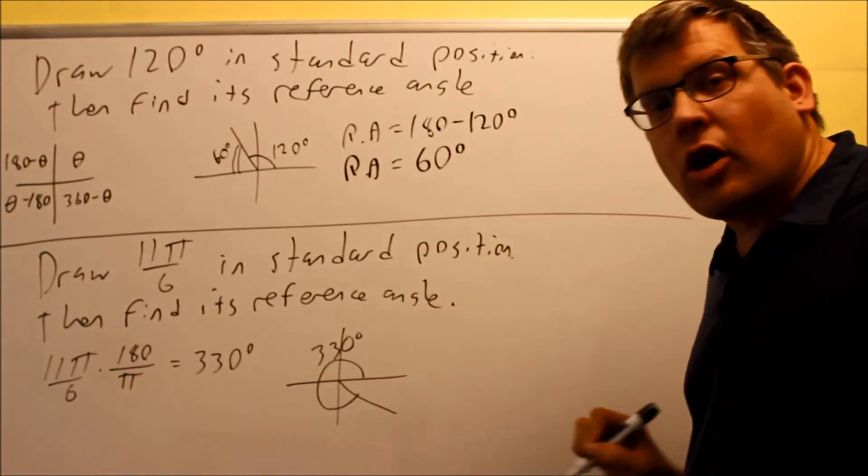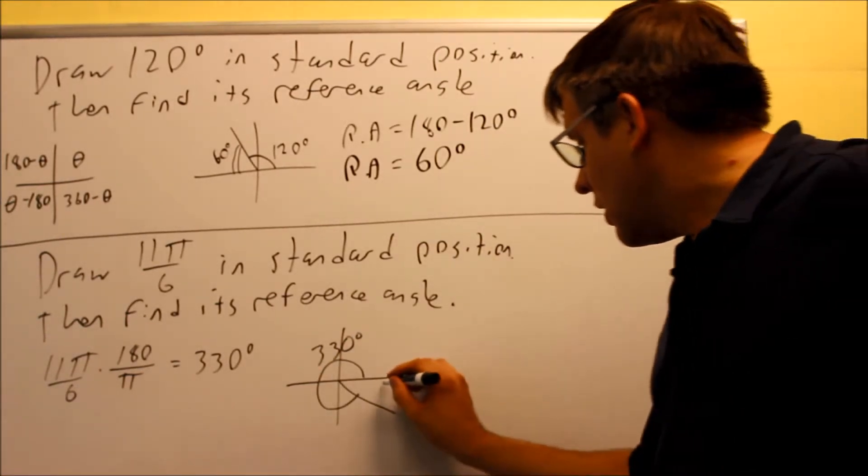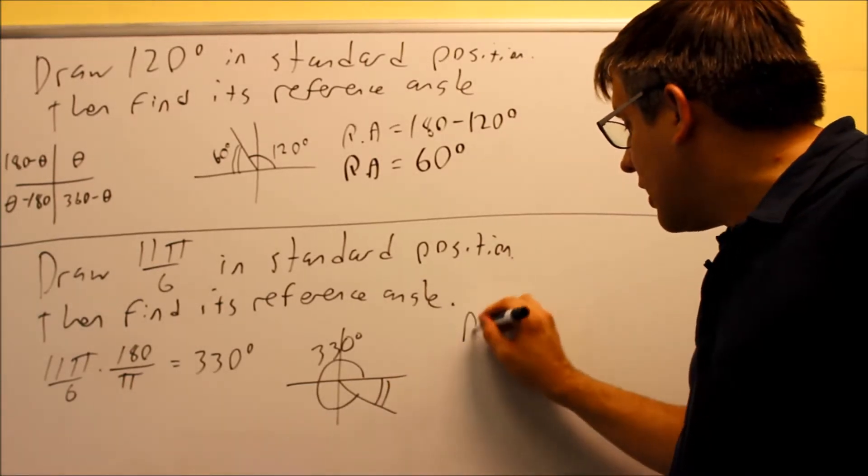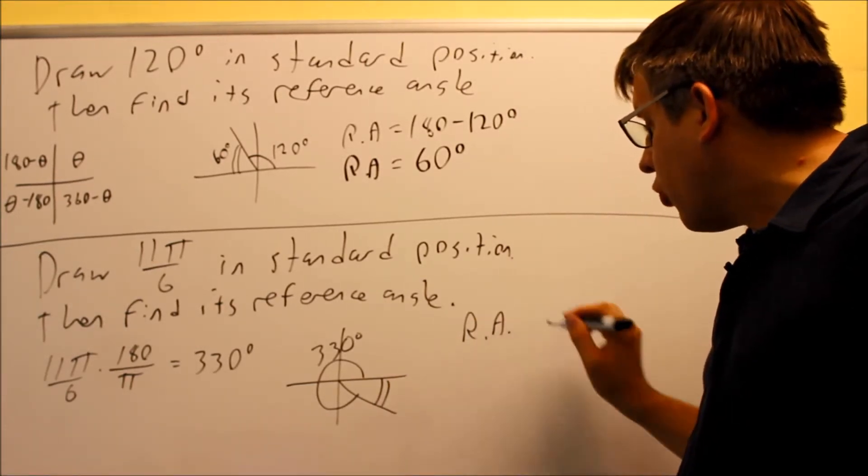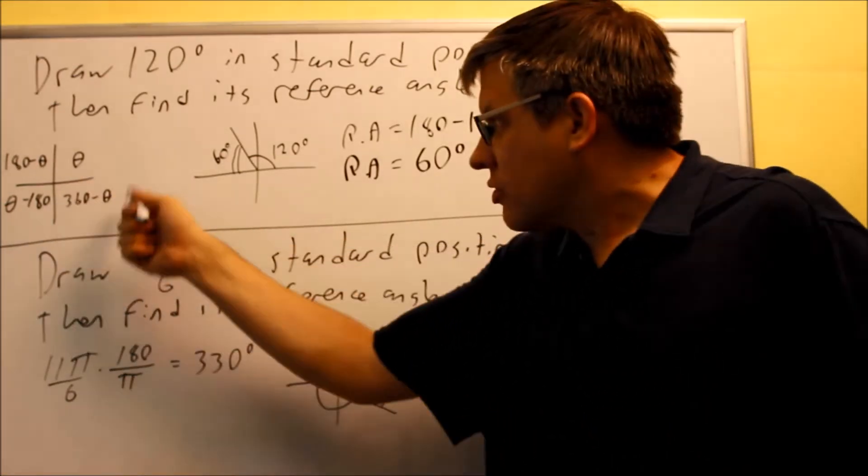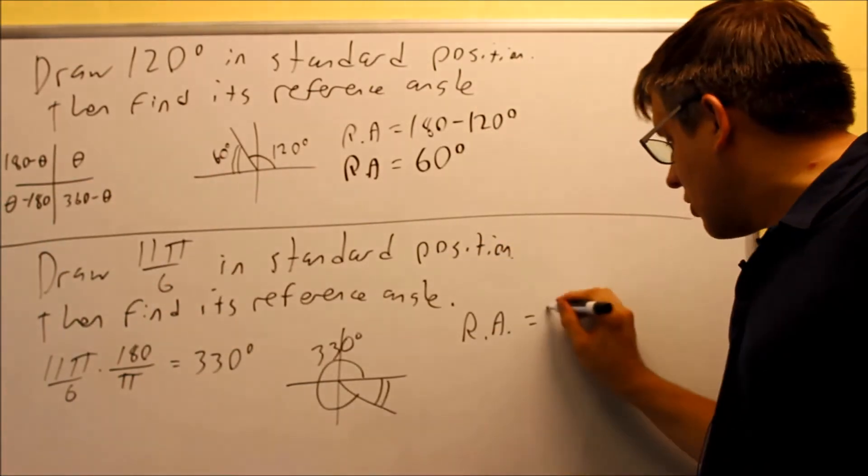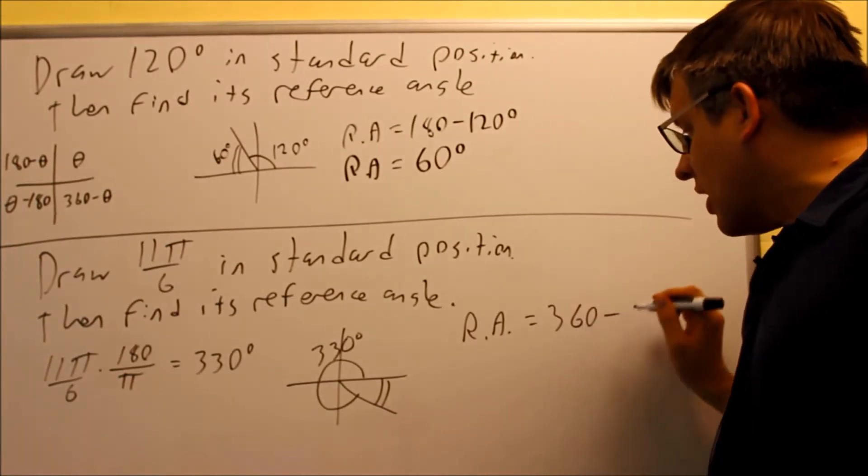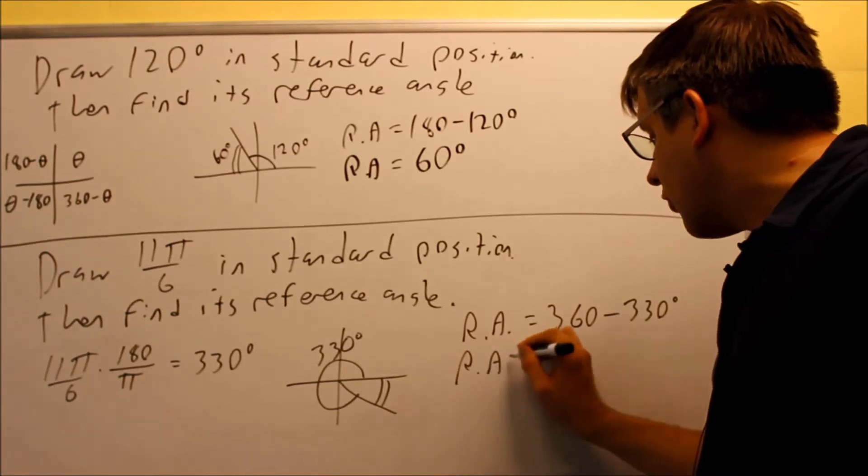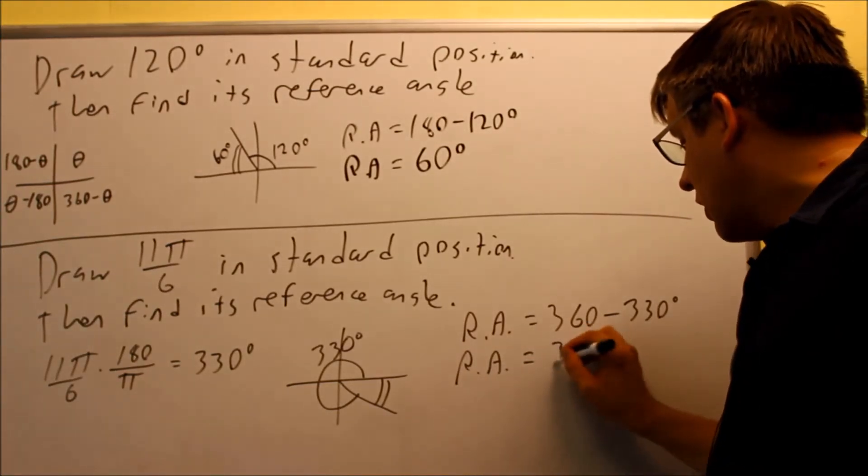The positive angles, remember, they always go counterclockwise. This angle right here, that's going to be our reference angle. We're going to find that by using the appropriate formula. The reference angle, it's in the fourth quadrant, so you're going to use 360 minus theta. So 360 minus your theta, that would be 330 in this case. So your reference angle is going to equal 30 degrees.